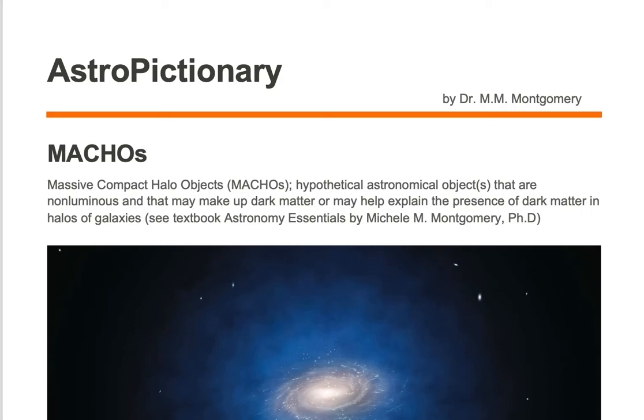MACHOs are massive compact halo objects. They are hypothetical astronomical objects that are non-luminous and that may make up dark matter or may help explain the presence of dark matter in halos of galaxies.